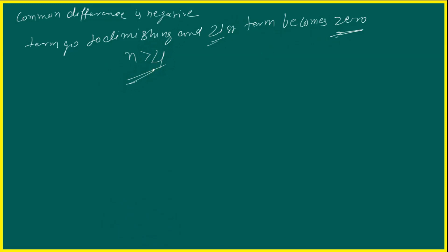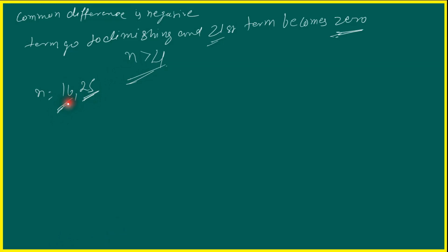So N is equal to less than 21 hoga. N ki 2 values hain: 16 aur 25. 25 greater than 21 hai, toh N 25 nahi ho sakta. Less than 21 kya hoga — 16 hoga. N ki value 16 hogi.